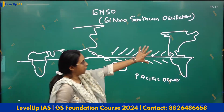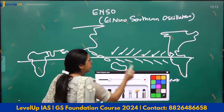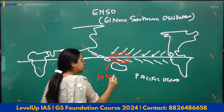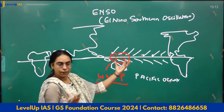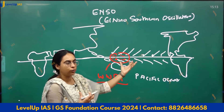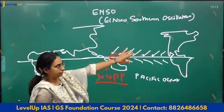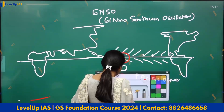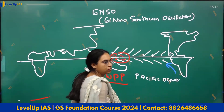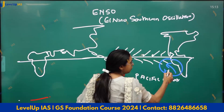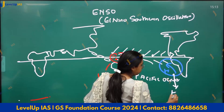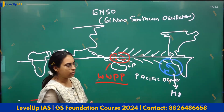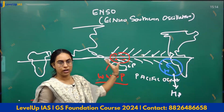Generally, what happens is there are trade winds. The trade winds lead to accumulation of warm water in the west, which is generally called the Warm West Pacific Pool — a pool of warm water in the West Pacific. And generally, along Peru, I have the cold Peru current, and therefore along Peru I generally have high pressure conditions. Along Australia, I have low pressure conditions. So high pressure at Peru and low pressure towards Australia — that is the normal case.